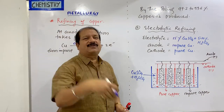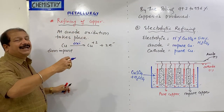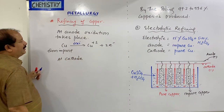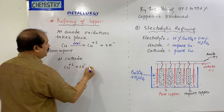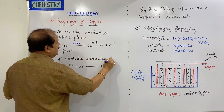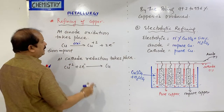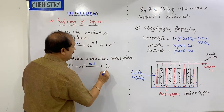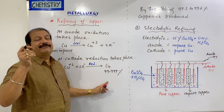What happens next? The anode copper dissolves into the electrolyte solution, and after going into solution, it deposits at the cathode. At the cathode: Cu²⁺ plus two electrons gives Cu. This is reduction. And this copper deposited at the cathode is 99.999% pure — five nines purity.